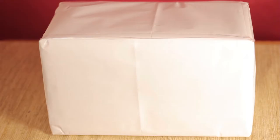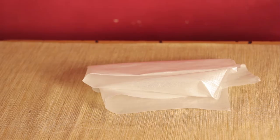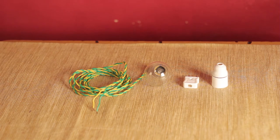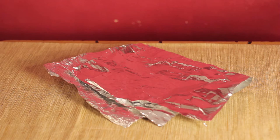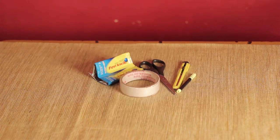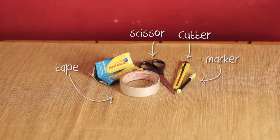To make a soft box you need: a box—a computer box or any other appliance box; butter paper or a translucent plastic; a bulb setup—there's a bulb, a wire, a bulb holder, and a clamp plug; three sheets of aluminum foil; and a couple of other things like a cutter, scissors, a marker, tape, and some glue.